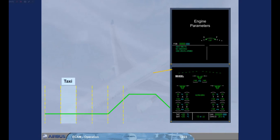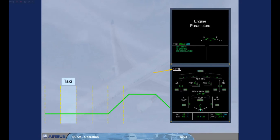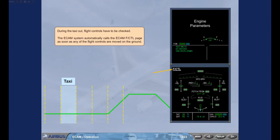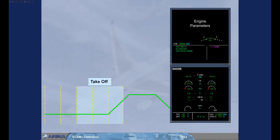During the taxi out, flight controls have to be checked. The ECAM system automatically calls the ECAM flight control page as soon as any of the flight controls are moved on the ground. When the engines are set to takeoff thrust, the ECAM engine page is automatically called.